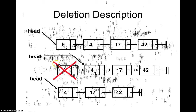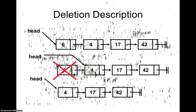Once that operation is done, we have the new linked list with the first node effectively removed. It is not deleted from memory as such, but because the head now points to the second node, that second node becomes the new head of the linked list.